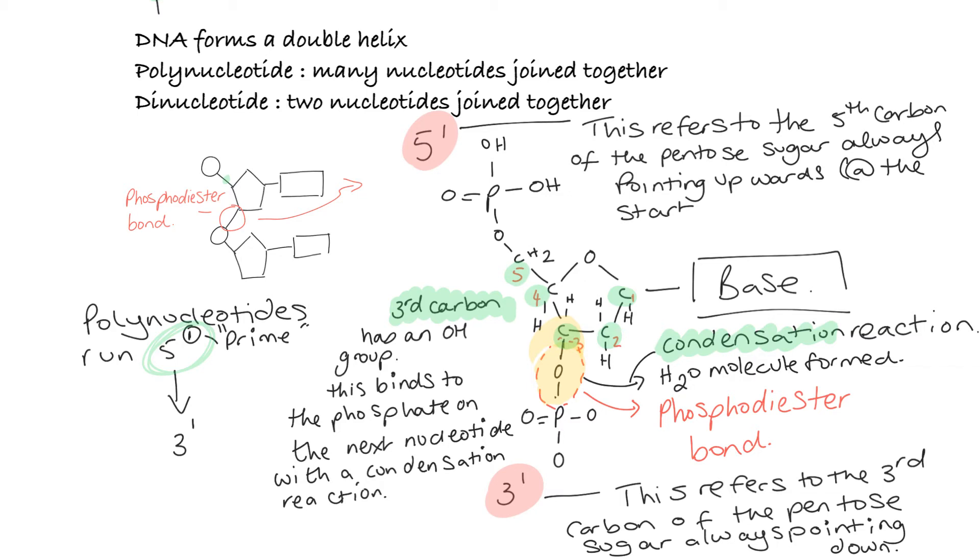And then if we look, we can see the third carbon is always going to be at the bottom. So if we think the third carbon is going to be here, it's going to be here. If there was another one, it would be here. So the third carbon is always at the bottom. So we say that polynucleotides run 5' to 3'. So that is the direction of travel when we're thinking about the formation of bonds as we're building up a DNA polynucleotide molecule.